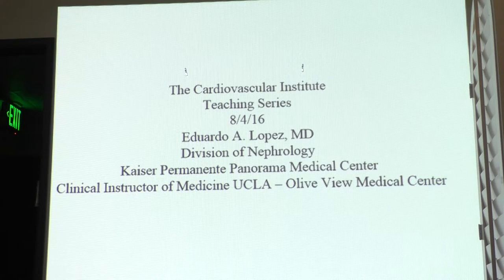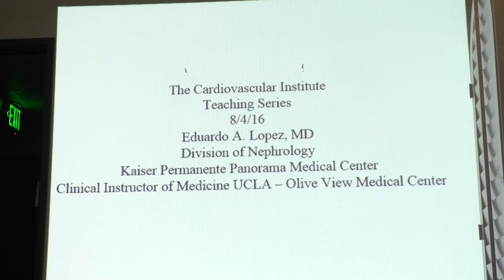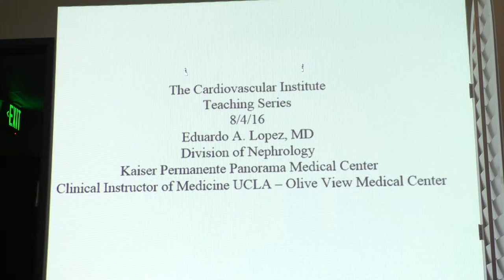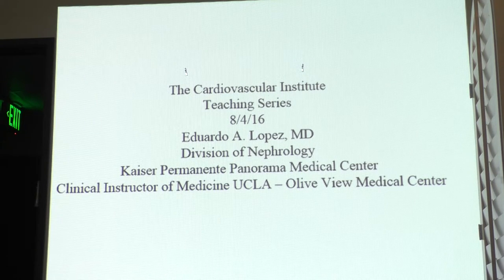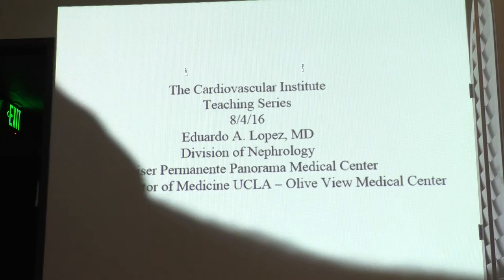If you're treating hyponatremia and the patient enters the polyuric phase, follow sodium every two to four hours to avoid over-correction. That's a sign of over-correction. With SIADH patients, you can get in trouble if you admit them and forget about the sodium — then the next day it's 135 and you've over-corrected 13 points. Then you need to induce therapeutic hyponatremia to show you tried to correct it.